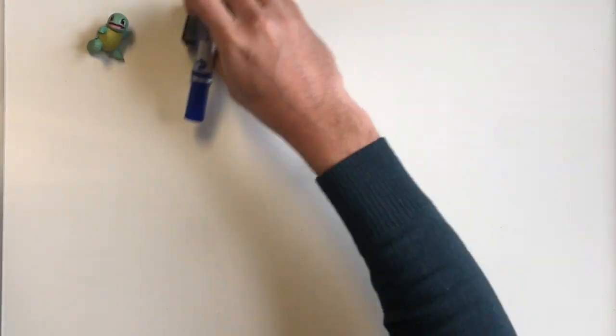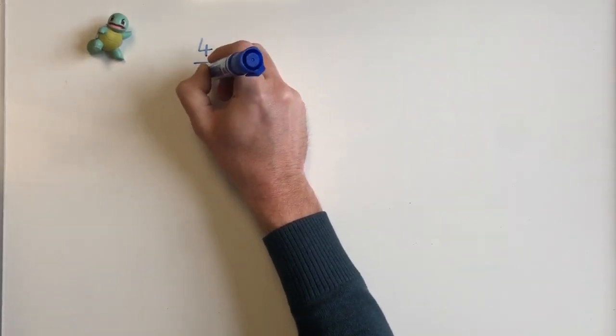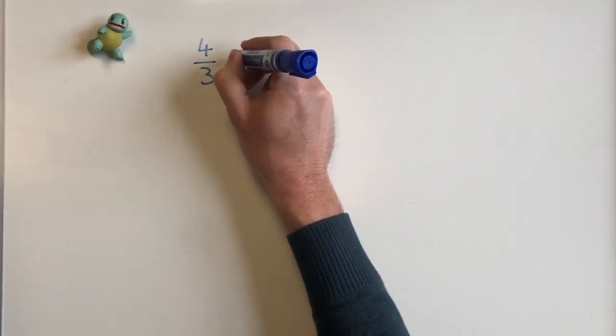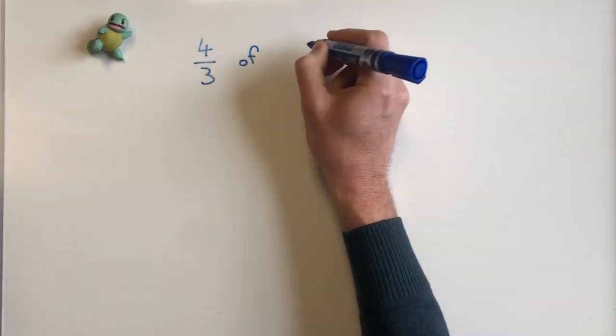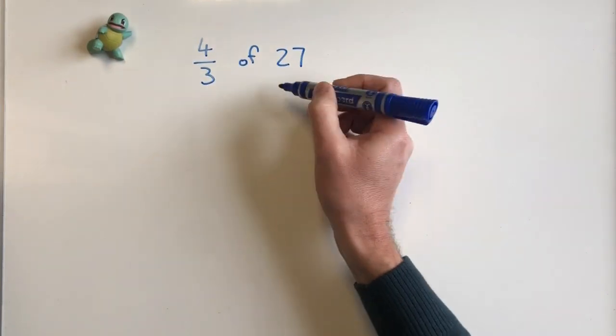But we can also use improper fractions. So for example, if I wanted to know four thirds or one and a third of, let's say, 27, I could do the same thing.